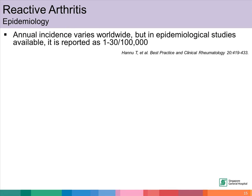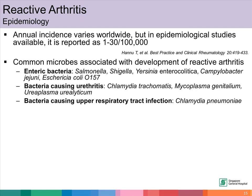The annual incidence of reactive arthritis varies worldwide, and it is not common. In epidemiological studies, it is reported as 1 to 30 per 100,000 population. Common microbes associated with the development of reactive arthritis include enteric bacteria like Salmonella, Shigella, and Campylobacter, bacteria causing urethritis like Chlamydia trachomatis and Mycoplasma genitalium, and bacteria causing upper respiratory tract infections such as Chlamydia pneumoniae.